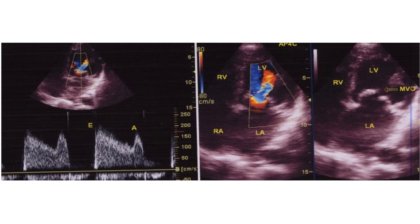The A wave will be absent if there is atrial fibrillation, as seen on the ECG. The upper half of the first panel shows a color Doppler image in the apical 4-chamber view with a mosaic, turbulent jet from the mitral valve into the left ventricle. The mosaic jet is due to the high velocity across the stenotic mitral valve.